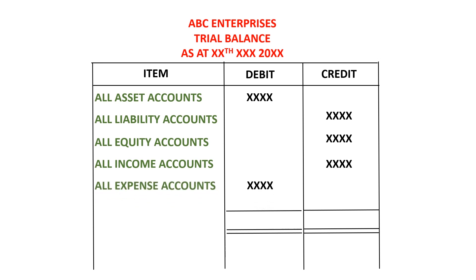As we are preparing the trial balance in that format, when we go ahead and add the total debits and the total credits, those two figures are expected to be the same. When those two figures are the same, it shows that the double entry has been done very well. A trial balance is not a financial statement — it is just prepared to check the arithmetic accuracy of the double entry system of accounting.